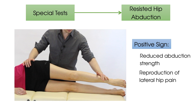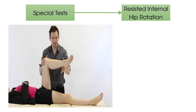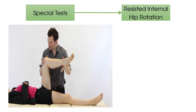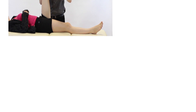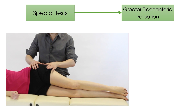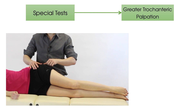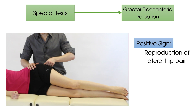Our next test is resisted internal hip rotation, starting from a fully externally rotated position, where once again the reproduction of lateral hip pain is a positive sign. Finally, is simple palpation of the greater trochanter of the hip, where you would certainly expect to reproduce your patient's pain if they have a notably irritable gluteal tendinopathy.